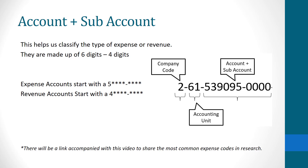The account and sub-account help classify the type of expense or revenue. They are made up of six digits followed by four digits. Expense accounts start with a five and revenue accounts start with a four. A link will be accompanied with this video to share the most common expense codes for research teams.